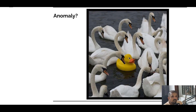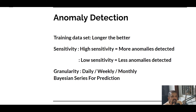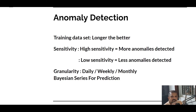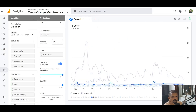There are three settings in Google Analytics 4 for anomaly detection. The first is training dataset, the second is sensitivity, and the third is granularity. We will see how to configure these in the interface itself — this slide is just to give you an overview. Let's head over to the Google Analytics demo interface.